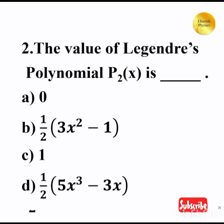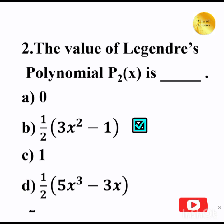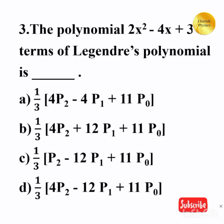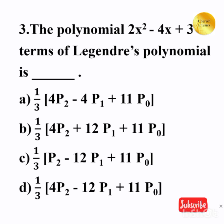The value of Legendre's polynomial P₂(x) is — [blank]. The polynomial 2x² minus 4x plus 3, expressed in terms of Legendre's polynomial, is — [blank].